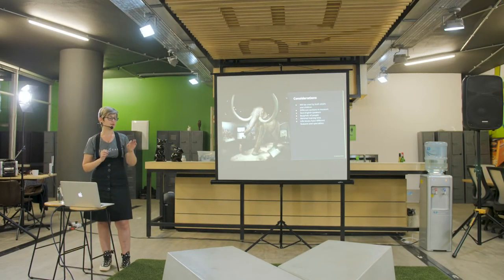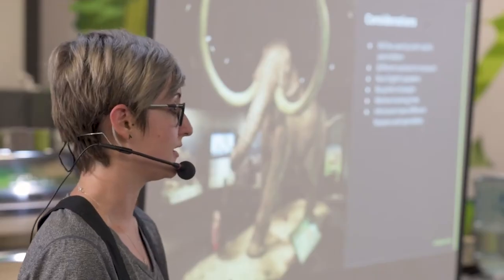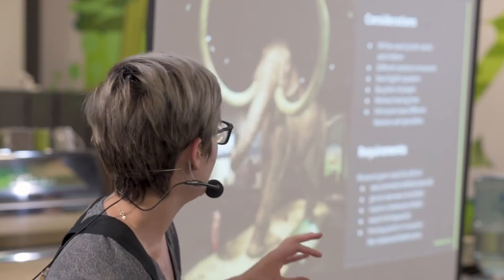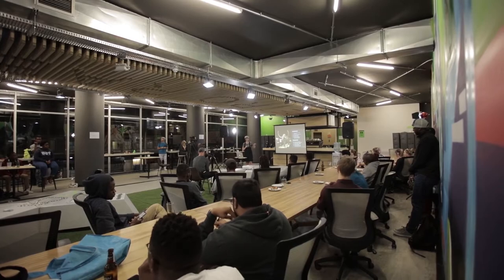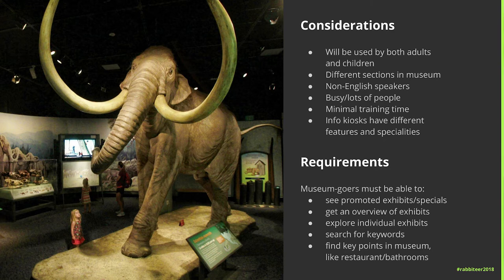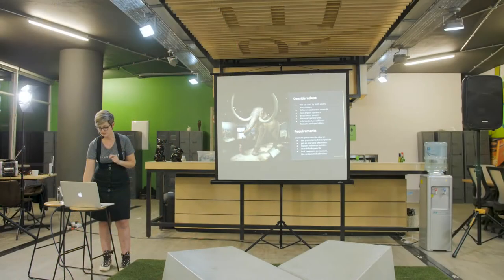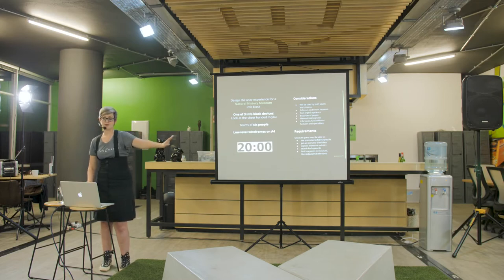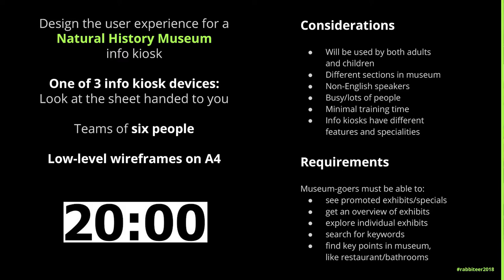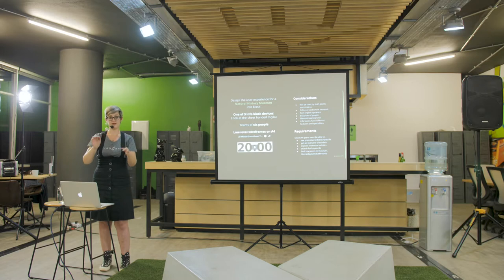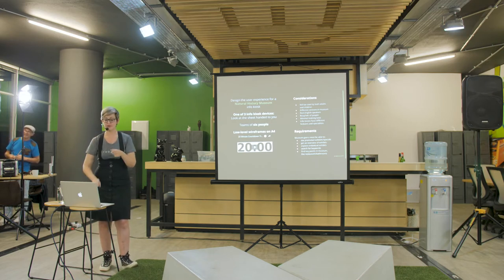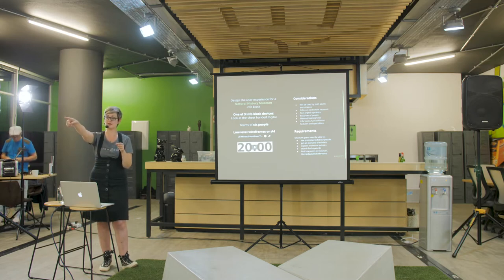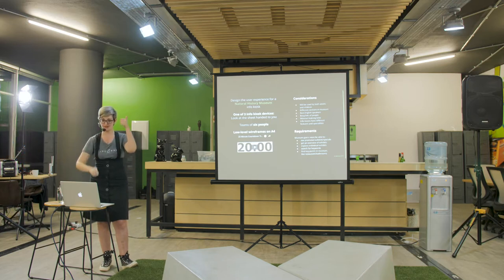You need to look very carefully at what these kiosks are capable of — some of them have very cool features you can use in interesting ways. The requirements: museum goers need to be able to see promoted exhibits and specials, get an overview of exhibits, explore individual exhibits, search for keywords, and find key points in the museum like bathrooms or exits. You have 20 minutes. At the back there are markers, sticky notes, and A4 pages. Divide into groups of six, get the sheets for the different info kiosks, and go.